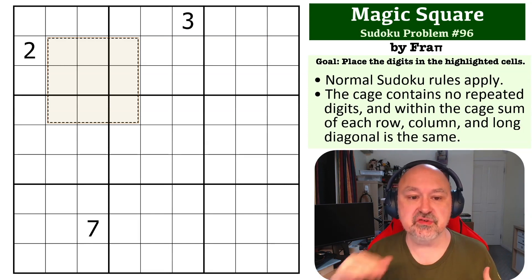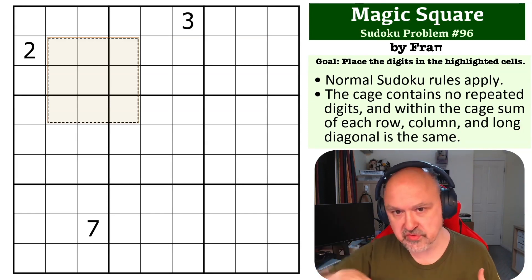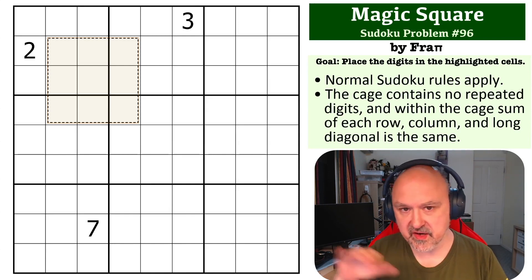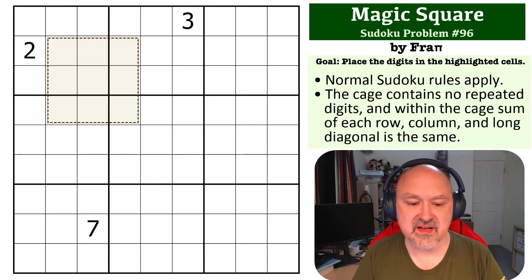So the sum of each row, column, and long diagonal will be the same sum. That's the definition of a magic square, where each of the rows, columns, and long diagonals have the same sum.